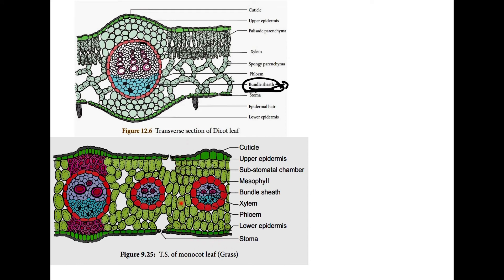In monocot leaf, the tissue between the epidermis is known as mesophyll. Unlike dicot leaf — which has palisade parenchyma and spongy parenchyma — in monocot leaf there is no such differentiation. There is no differentiation of the mesophyll into palisade and spongy parenchyma. All the cells look alike — spherical, elongated, polygonal, or oval — and they all contain chlorophyll pigments.